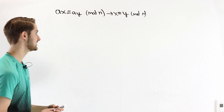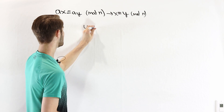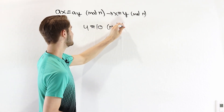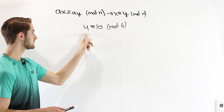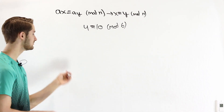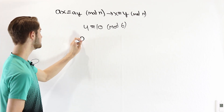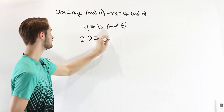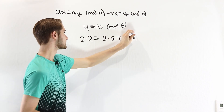Let's look at an example. We know that 4 ≡ 10 mod 6. Notice that the numbers on both sides of this congruence are even, which means they contain a factor of 2. We can write this as 2×2 ≡ 2×5 mod 6.